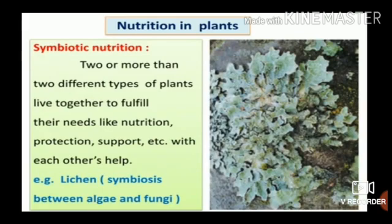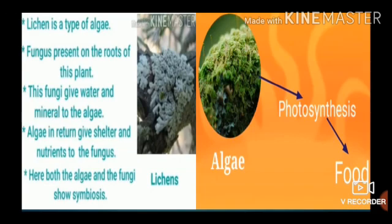In symbiosis between algae and fungi: Some fungi grow around the roots of plants, which supply nutrients to the fungi; in turn, fungi supply minerals and water to the plants. Some fungi and algae live together — the fungi provides water, minerals, and shelter to the algae; in return, the algae provide food to the fungi. Lichen is an example of symbiosis between algae and fungi.